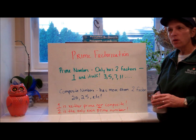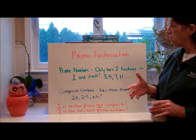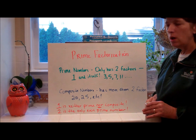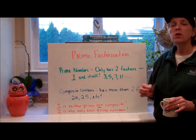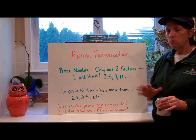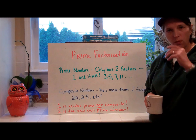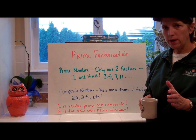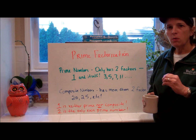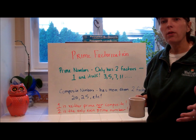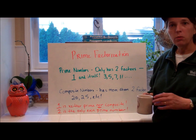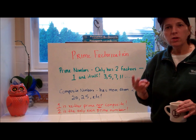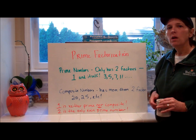One thing you have to know is what's involved with prime factorization: prime numbers and composite numbers. You need to know what those are first of all. Prime numbers are numbers that only have two factors — one and itself. Recall from the last video: factors are any numbers that multiply together to get another number. It could be two numbers or more. With prime numbers, there are only two numbers that multiply together to get that number.